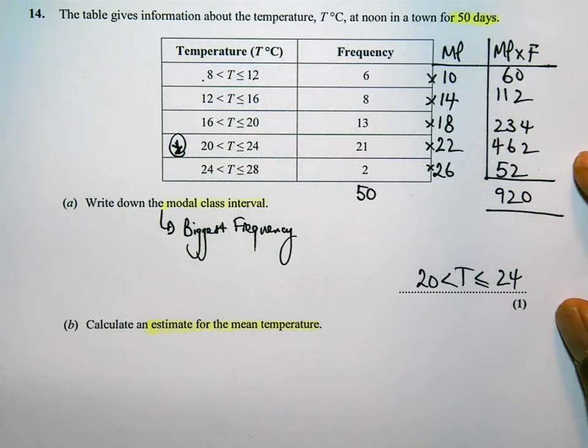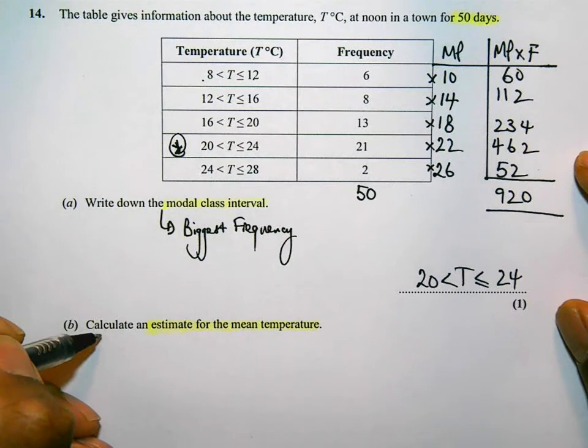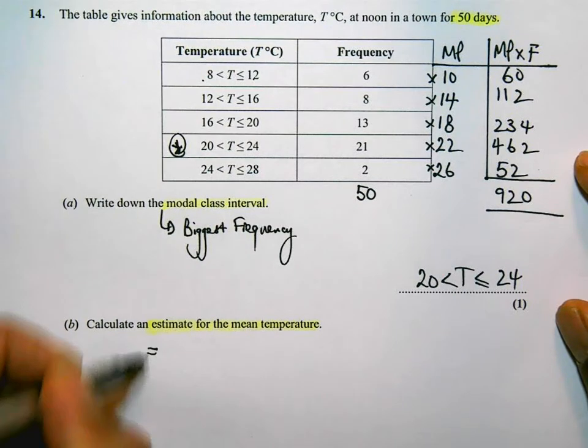Because this question is so straightforward, I want to make sure that I do get full marks in it. I know for a fact that I've done this correct so far. So, to work out an estimate of the mean, that's going to be equal to 920 divided by 50.